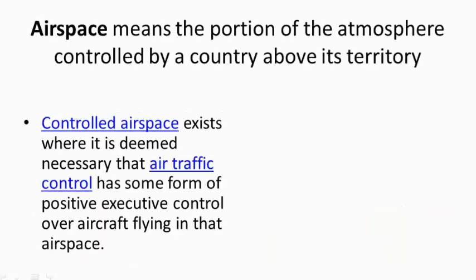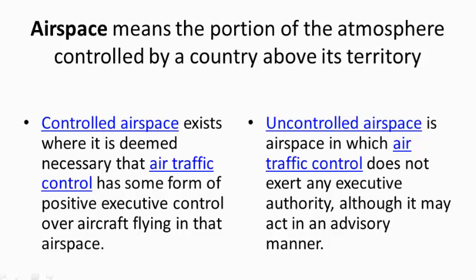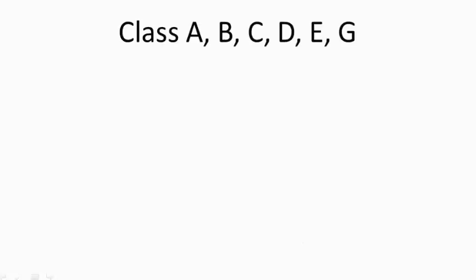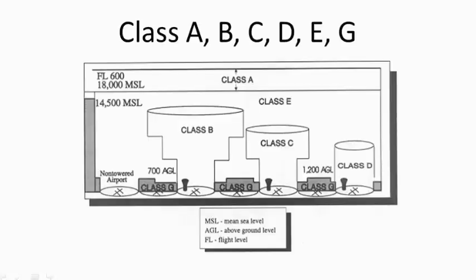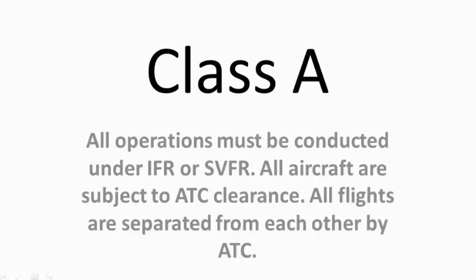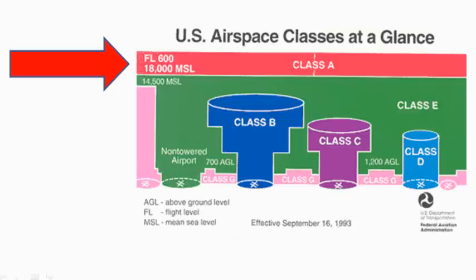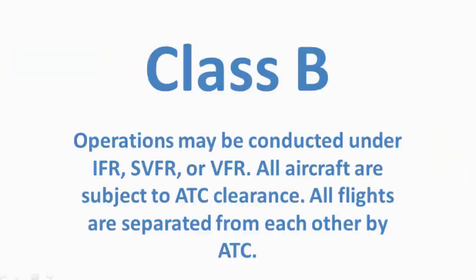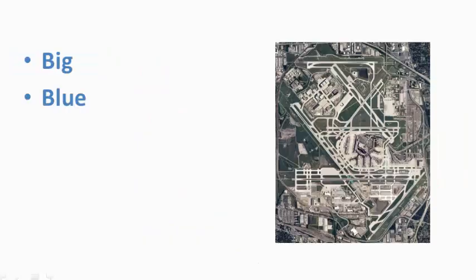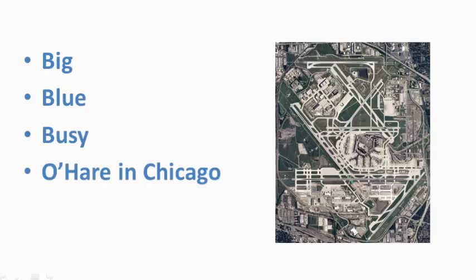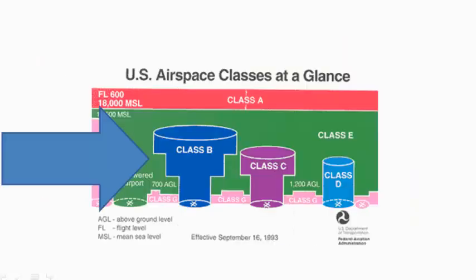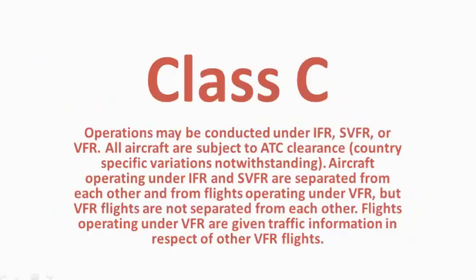There really is a ton of stuff — between controlled airspace, uncontrolled airspace, class A, B, C, D, E, G, cloud clearance and visibilities, VFR, special VFR, IFR — the list goes on and on.